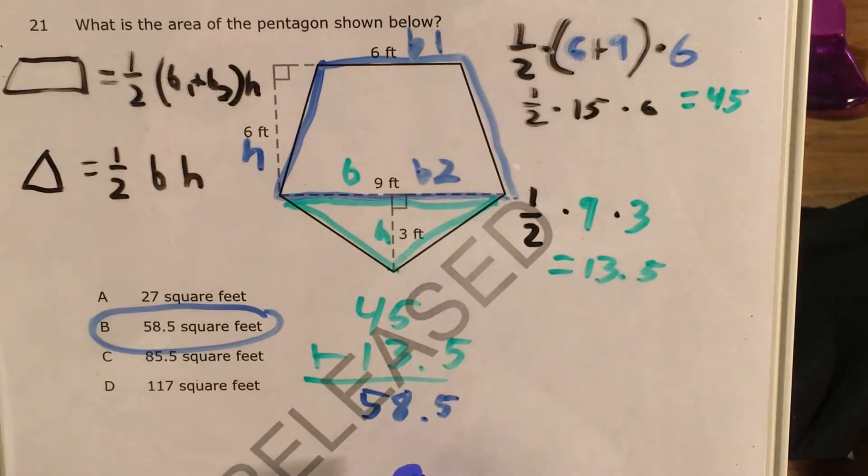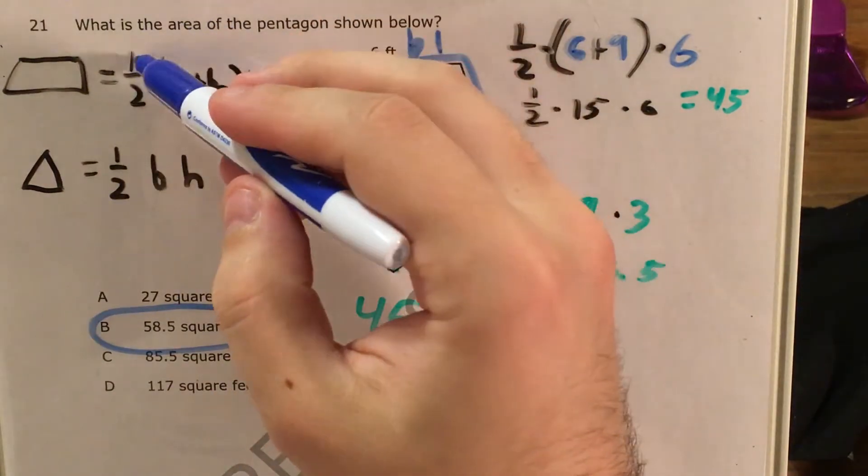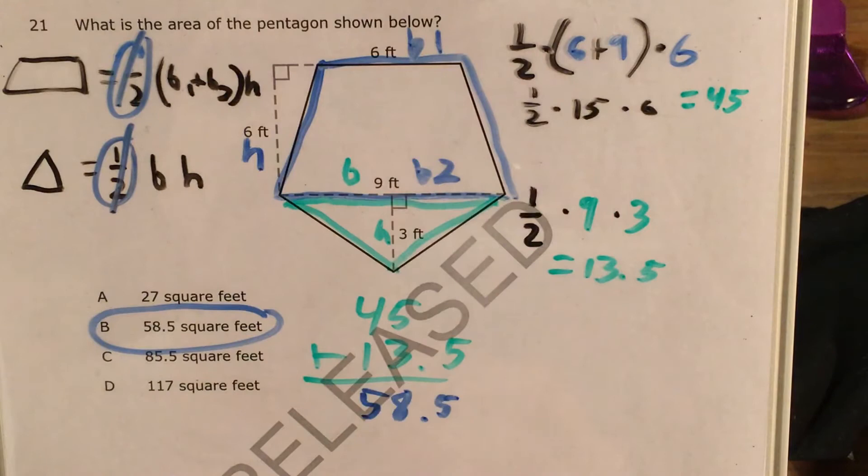Now I do want to talk about a trick answer here because let's say that we forgot about our one-halves on each of these. Well, if we forget about our one-halves, our answer that we would end up getting would be...